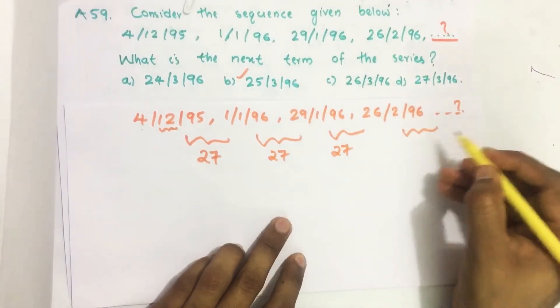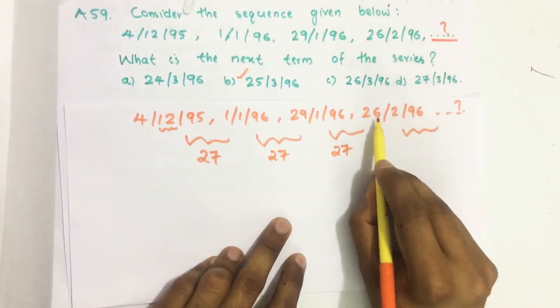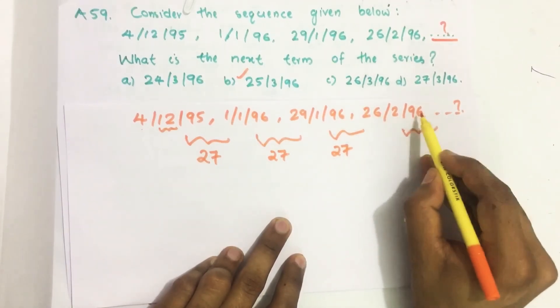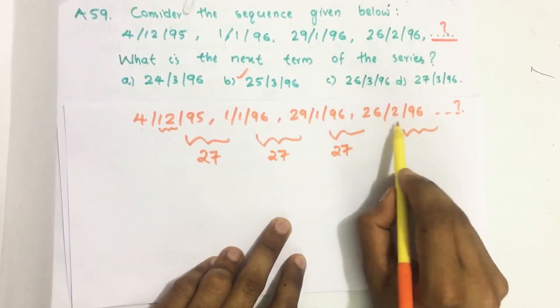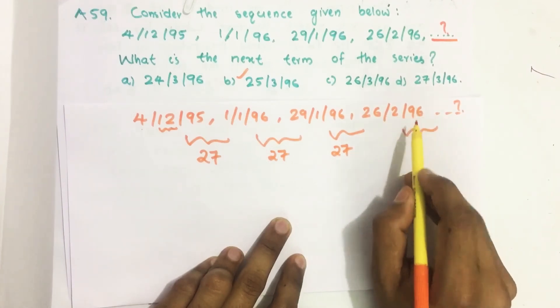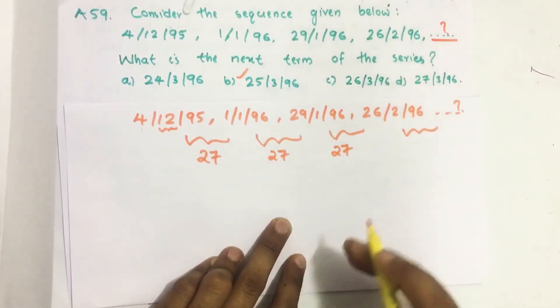Now let us find the next date here. This is a leap year. So there are 29 days in 1996 February month.